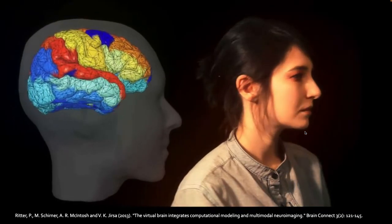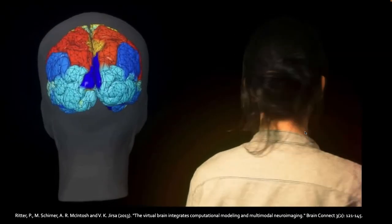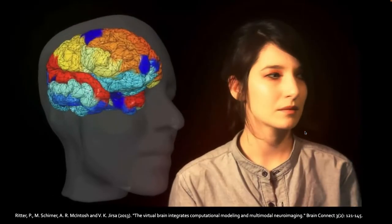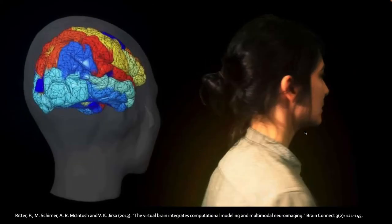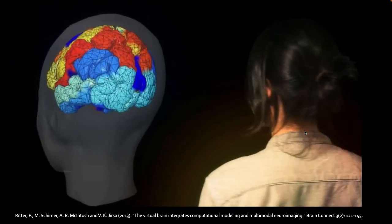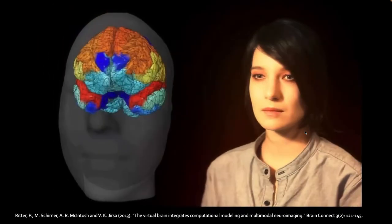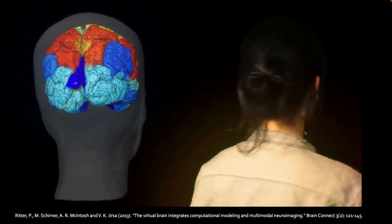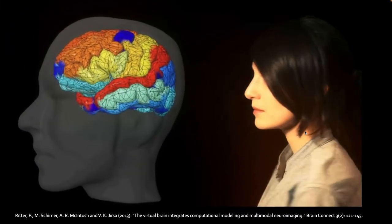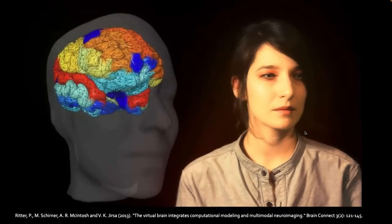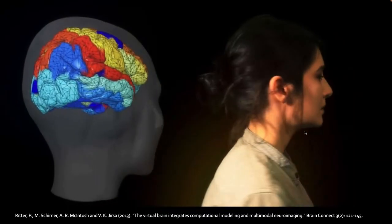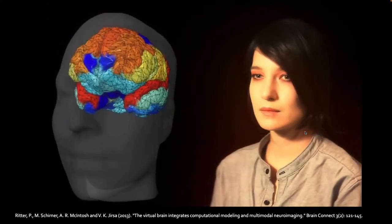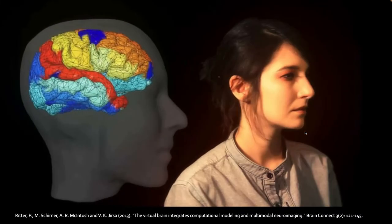Most of you probably know what the Virtual Brain is all about. It enables personalized brain simulations — it's possible to construct individualized computational brain models on the computer, either from a human person (like our lab member Jessica Palmer and her computational brain), or with animal brains, such as macaque brains and rodent brains.